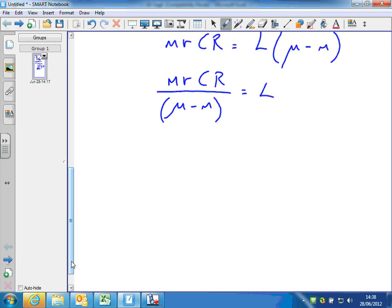And so finally, just write it with the subject of the formula on the left, by convention: L equals m r C R over mu minus m, which I presume is the answer in the textbook.